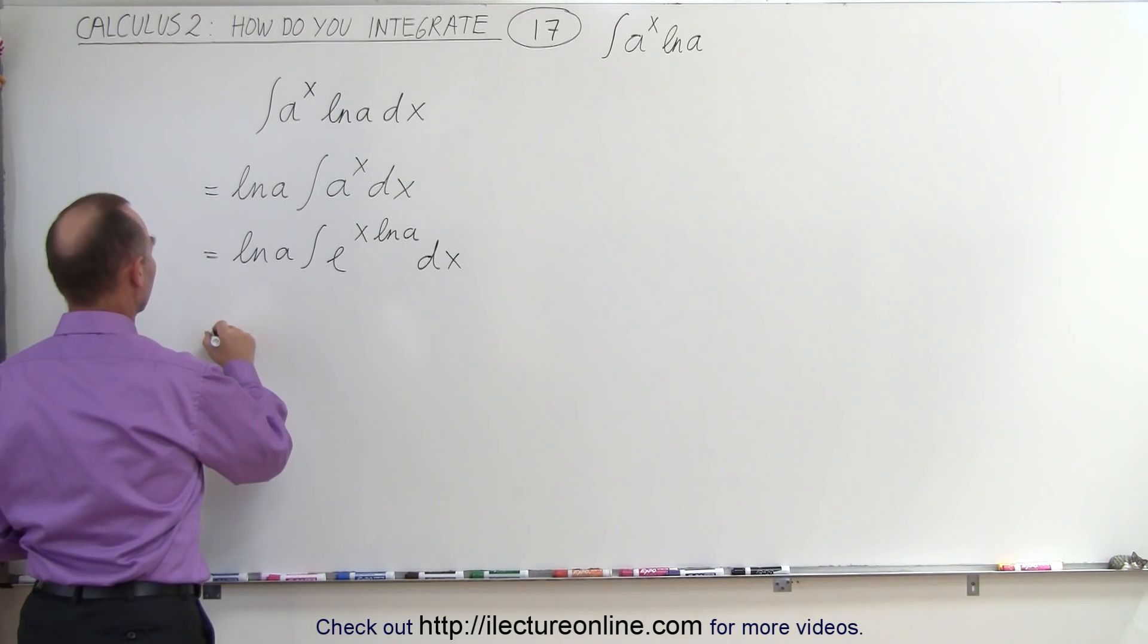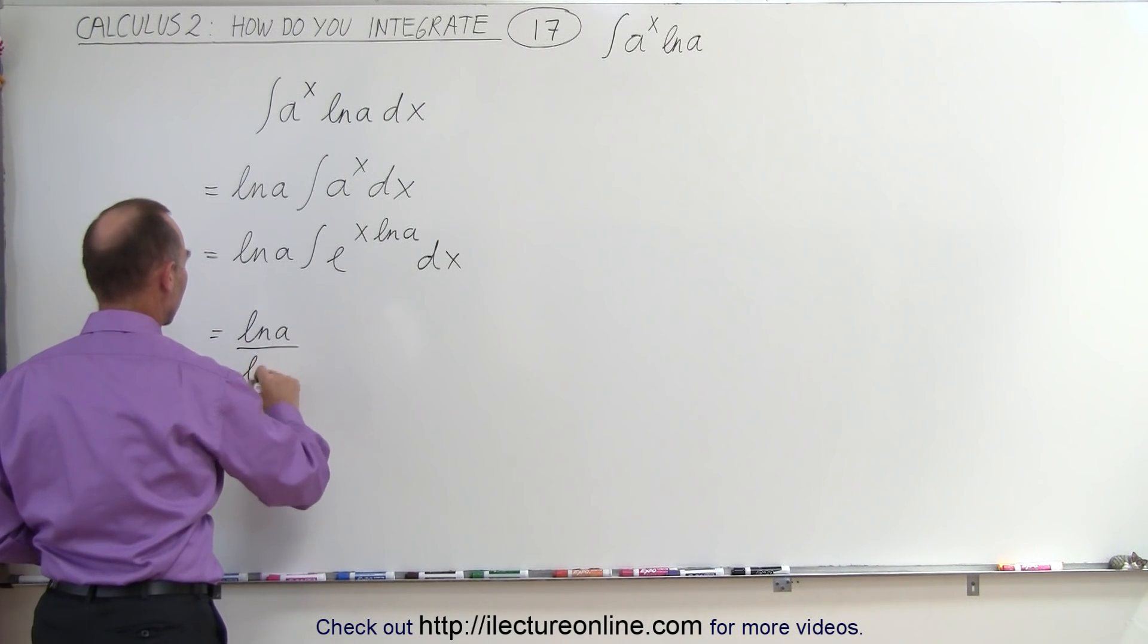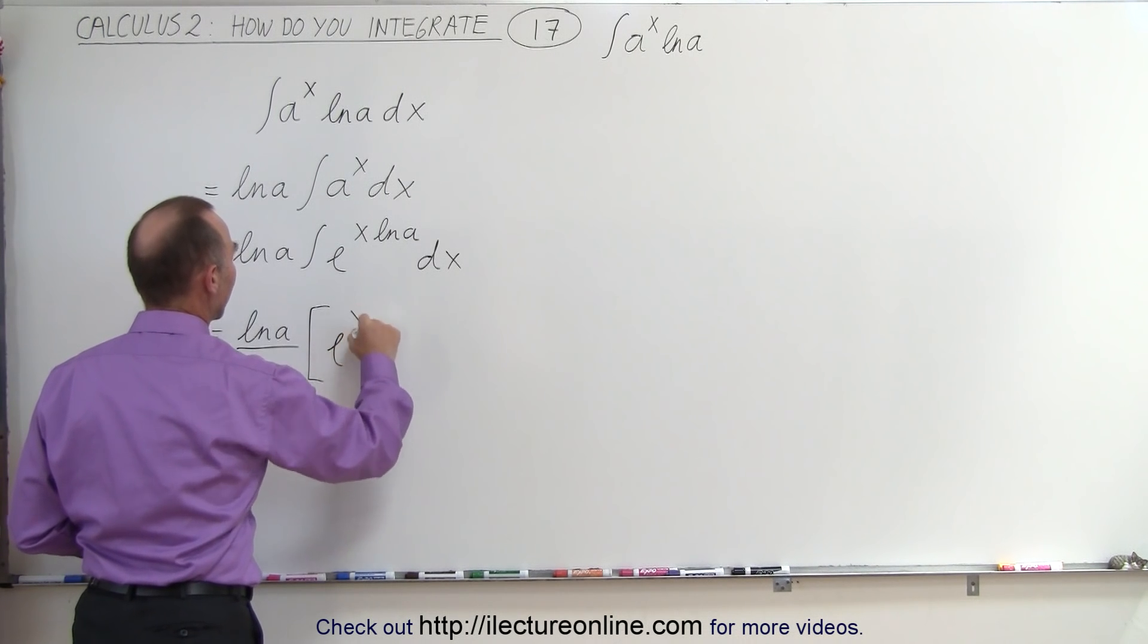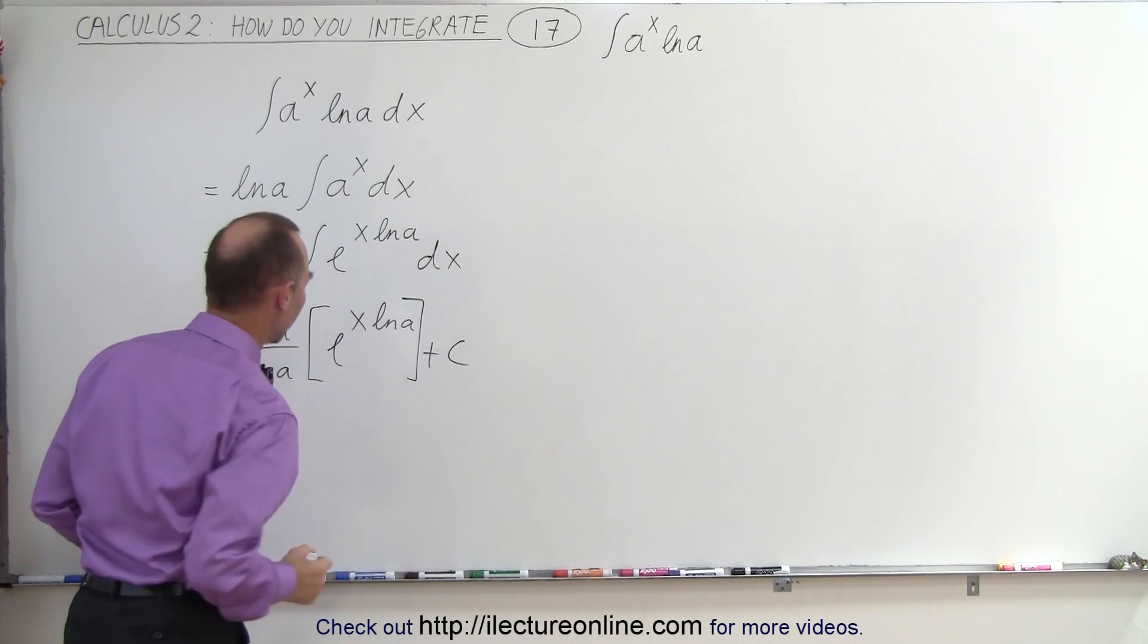This becomes equal to the natural log of a divided by this constant here, which is the natural log of a times e to the x times the natural log of a plus a constant of integration.